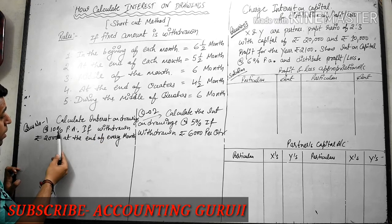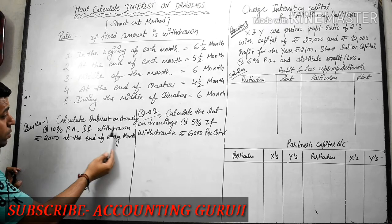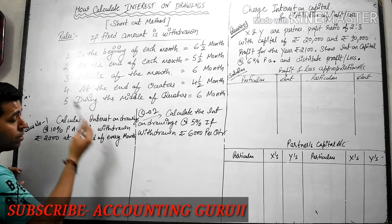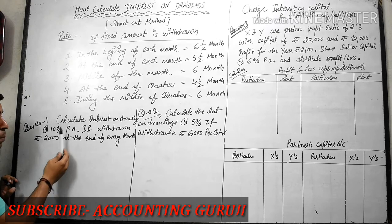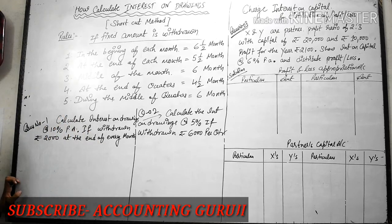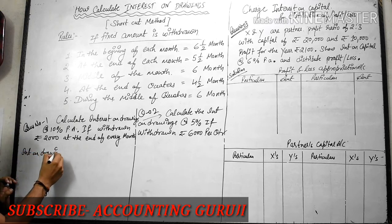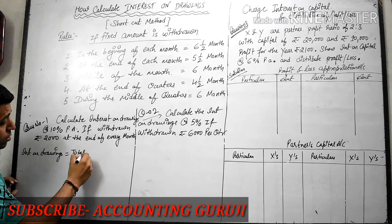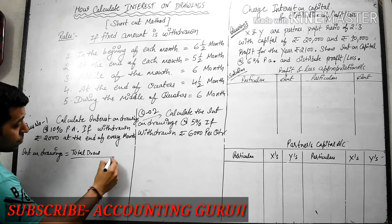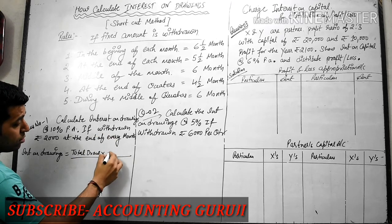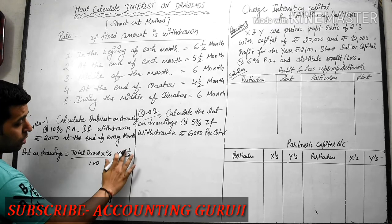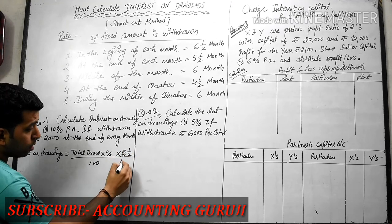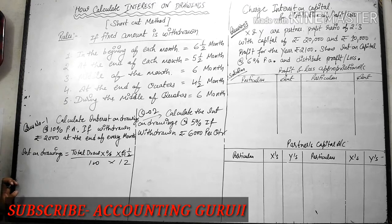First question: Calculate interest on drawing at 10% per annum if a partner withdraws rupees 2,000 at the end of every month. So guys, at 10% per annum, how much is the interest on drawings? The formula for interest on drawings is: Total Drawings × Percentage / 100 × Months / 12. Here, months will be 5.5 (i.e., 11/2) since withdrawal is at the end of each month.